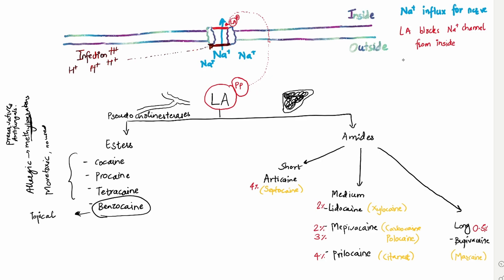So in infections, the blocks from outside. And that's how it blocks it. And that's why this cannot go in, but you also need more amount of, so this is already passing here and here and here. So you need a lot more LA for numbing.